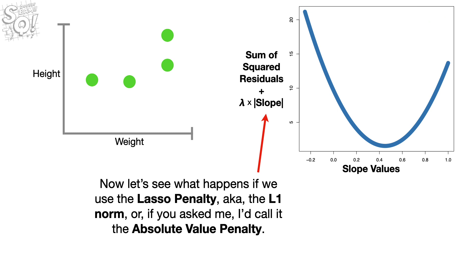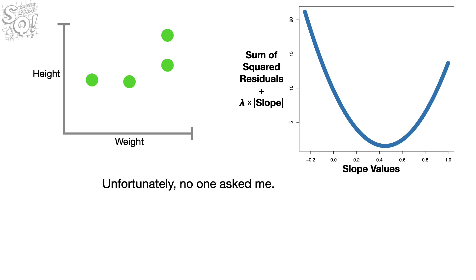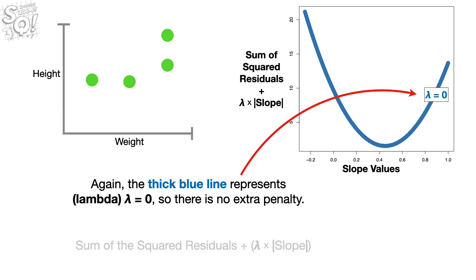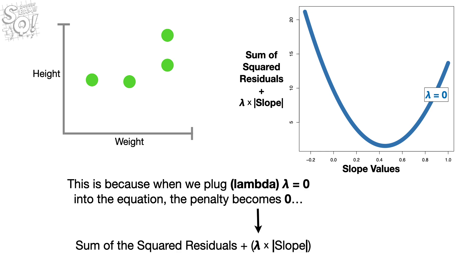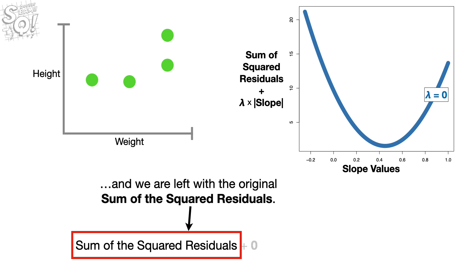Now let's see what happens if we use the lasso penalty, a.k.a. the L1 norm — or, if you asked me, I'd call it the absolute value penalty. Unfortunately, no one asked me. Again, the thick blue line represents lambda equals 0, so there is no extra penalty. This is because when we plug lambda equals 0 into the equation, the penalty becomes 0, and we are left with the original sum of the squared residuals.